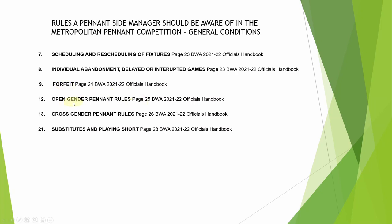Open gender pennant rules are new and go hand in hand with cross gender pennant rules. Depending on what division you're in, you should know what those rules are in case the opposition turns up and, under the open gender rules, the opposite gender can skip. Know those rules so you can advise your players about what they can and can't do in your team and in the opposition, to save any arguments. Also, substitutes and playing short — if someone suddenly takes sick, know how to play short. Currently, you play three players and two bowls short.